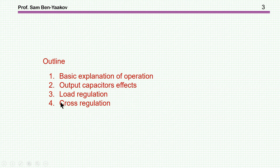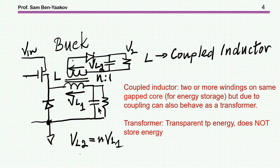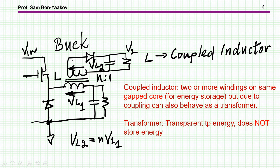I'll also mention what is load regulation and what is affecting cross-regulation. Let me start with the buck configuration. Here I'm showing an inductor — this is now a coupled inductor, meaning we have two or more windings on the same gapped core. This is a gapped core because it is an inductor, so it's meant to store energy. However, due to having two windings, it is also acting as a transformer. A transformer, by definition, is a device which does not store energy — it's transparent to energy. So basically, this is a coupled inductor — an inductor with an extra winding — and as we will see, it will also operate as a transformer.